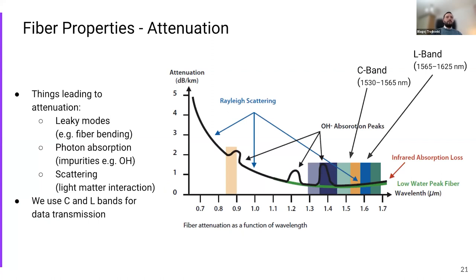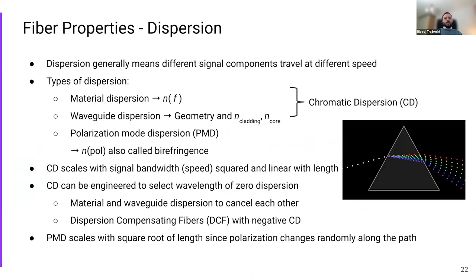Now let's move to fiber properties. Attenuation is the main one — it is the weakening of light throughout transmission, so the signal loses energy from source to destination. The causes include leaky modes, photon absorption, scattering, and other frequency-specific effects. For example, OH ions absorb more around 1350 nanometers. Looking at the attenuation profile, it is clear that the C and L bands are the most convenient for transmission because they have the least absorption and the least attenuation.